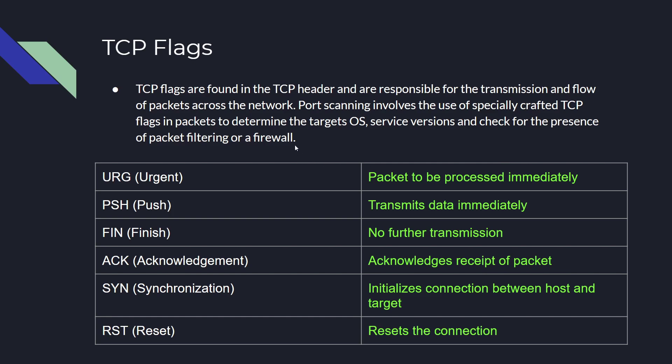Let's start with the first flag: URG, or the urgent flag, which is used to specify that the packet needs to be processed immediately. You then have the PSH, or push flag, which is used to transmit data immediately. Then you have FIN, which ends the transmission. Then ACK, which acknowledges the receipt of a packet. SYN, for synchronization, initializes a connection between a host and a target. And then RST, which resets the connection — it essentially cuts the connection and does not allow for the connection to be completed or for any data transmission until a new connection is initialized.